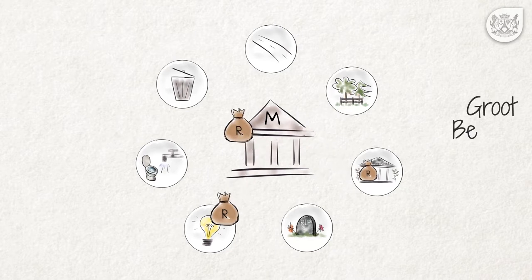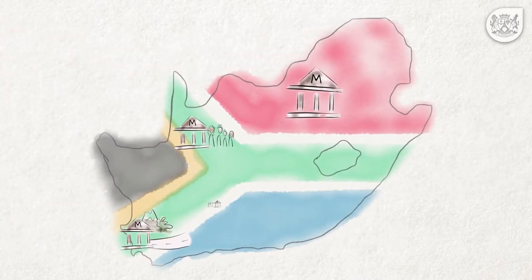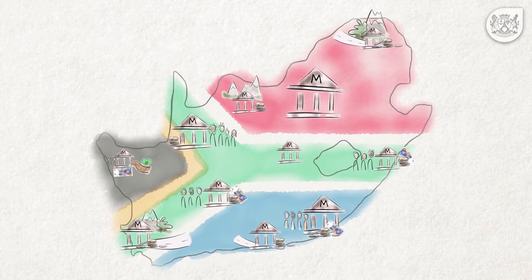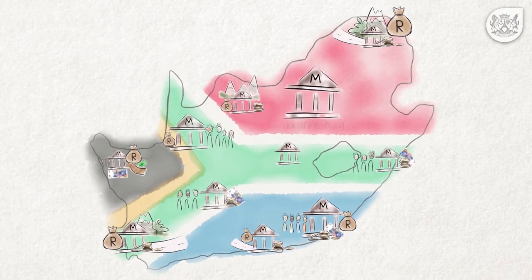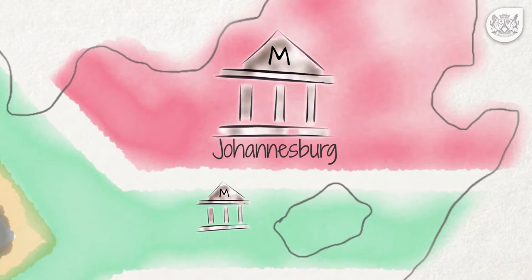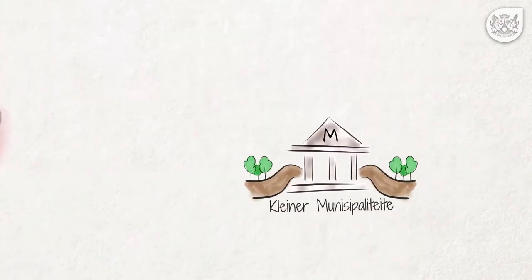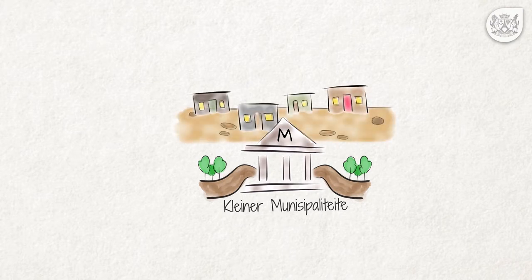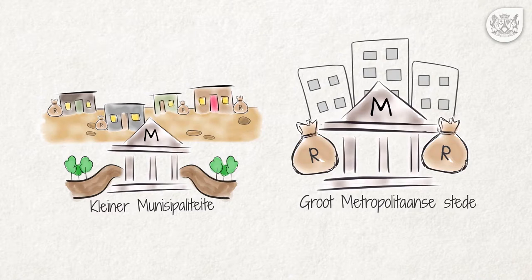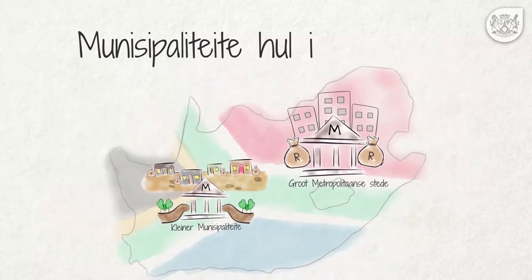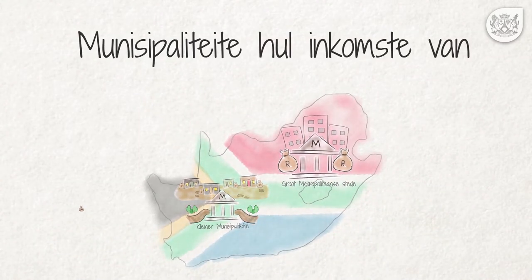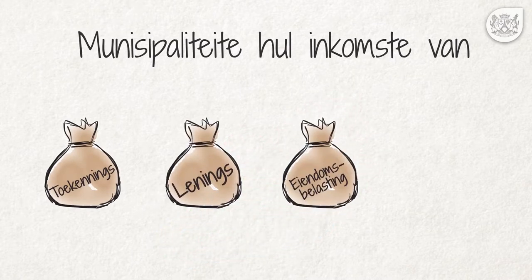Om die dienste wat die Grondwet bepaal te kan lewer, het munisipaliteite groot bedrae geld nodig. Munisipaliteite verskil ten opsigte van grootte, sosiale struktuur en diensbehoeftes. Dit beteken dat hulle vermoë om inkomste te verkry en die uitgawes wat hulle moet aangaan ook grootliks sal verskil. 'n Groot stad soos Johannesburg moet byvoorbeeld snelweë bou en instandhou, terwyl plattelandse dorpe net enkele teerpaaie hoef te versorg. Kleiner munisipaliteite het dikwels uitgestrekte landelike gebiede met inwoners wat nie die finansiële vermoë het om vir dienste te betaal nie. Wat ook al hulle grootte of struktuur, moet alle munisipaliteite hul inkomste van dieselfde bronne bekom, naamlik toekennings, lenings, eiendomsbelasting en gebruikersheffings.